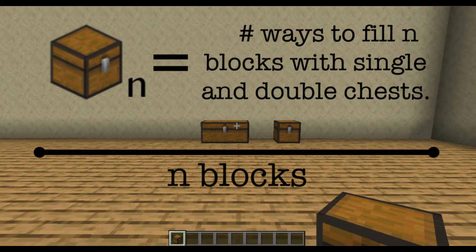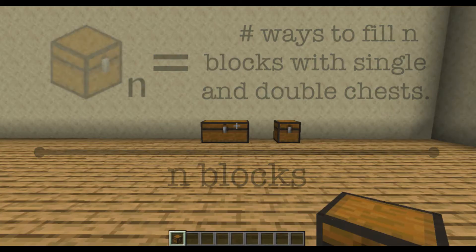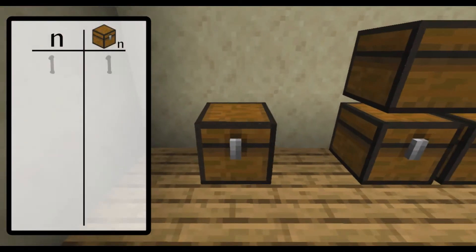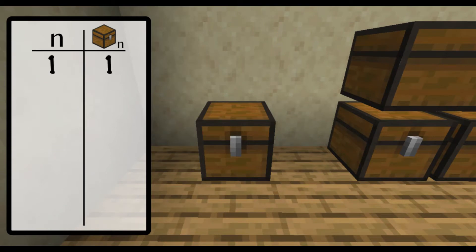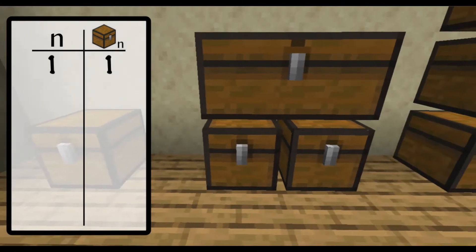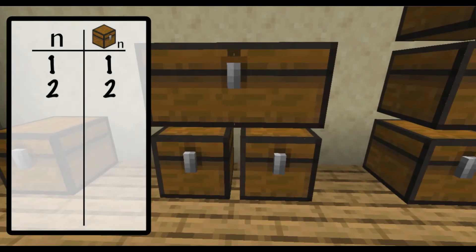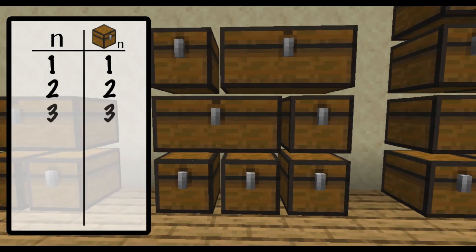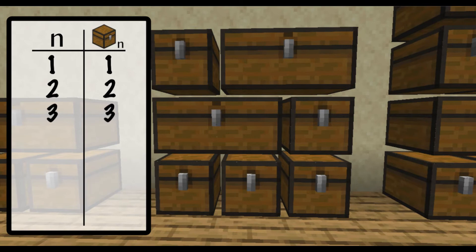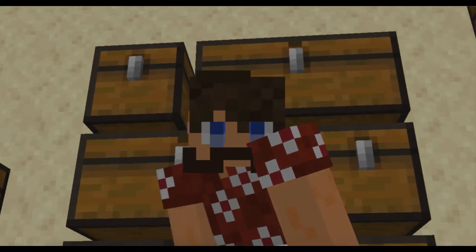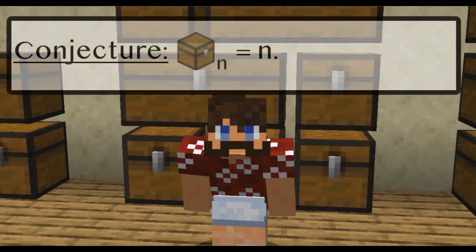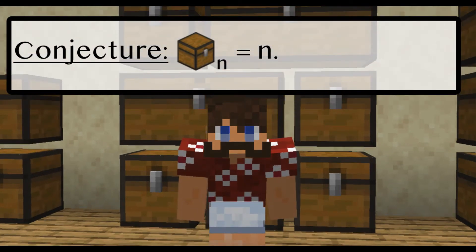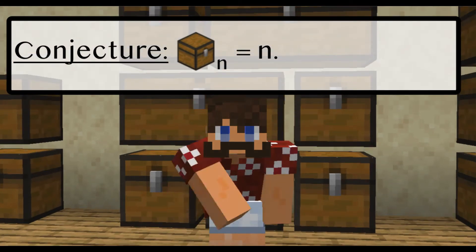Usually a good way to start these problems is to start with small values of n. So if you want to just fill one block, there's one way to do it. For n equals two, there's two ways: single single or just a double chest. n equals three, there's three ways. So you might be thinking, maybe the number of ways to fill n blocks with single and double chests is n. Let's see if that works.